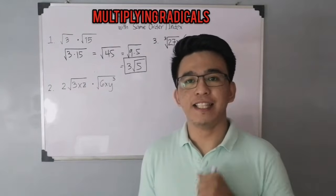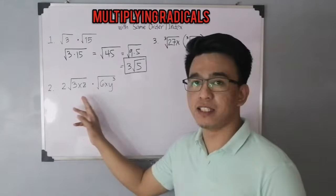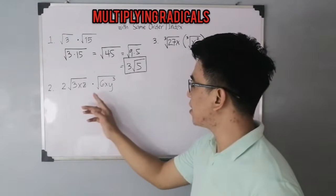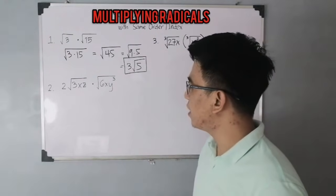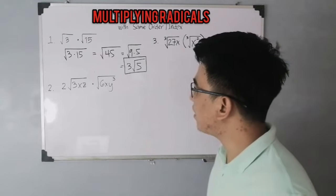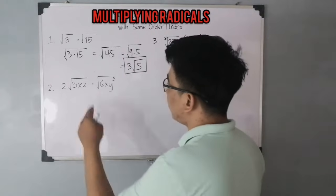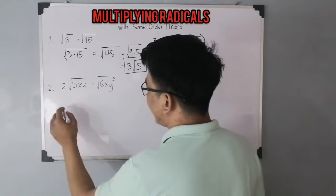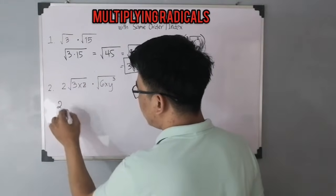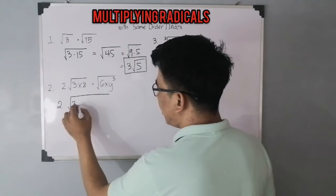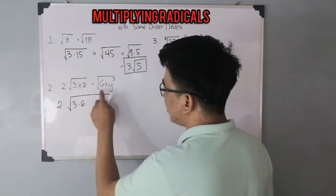Now let's have item number 2, where we are given 2 times the square root of 3xz times the square root of 6xy³. Since they have the same order, we multiply the radicands. We have 2 times the square root of 3 times 6. For the x variable, x times x gives you x squared.